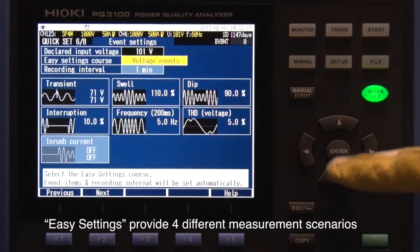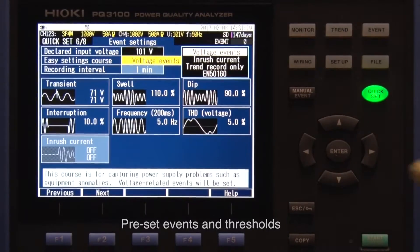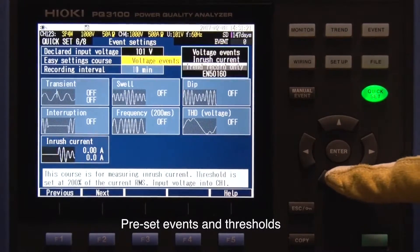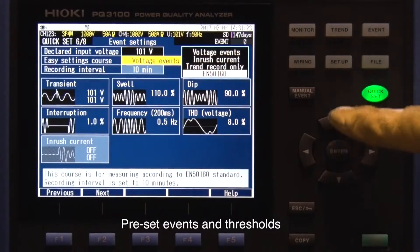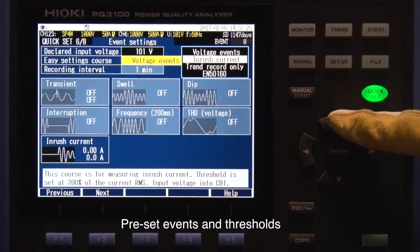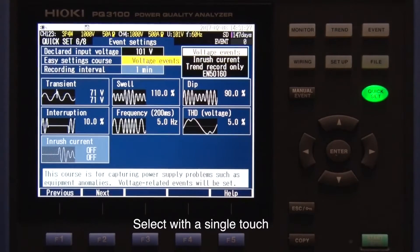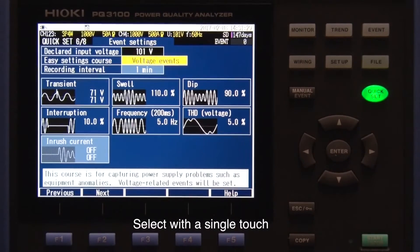Within the quick set function under easy settings, you can choose from several different measurement scenarios. The screen shows the threshold set for each parameter. Simply select the scenario with a single touch.